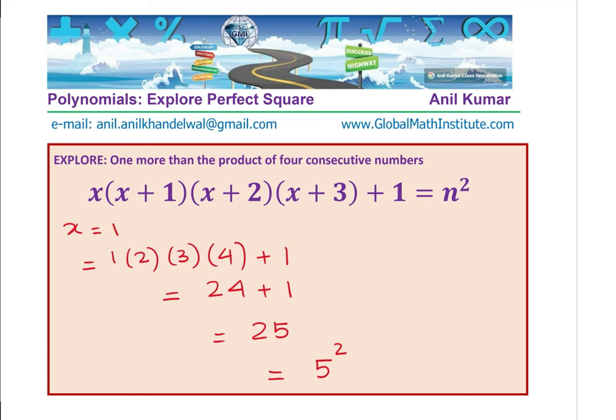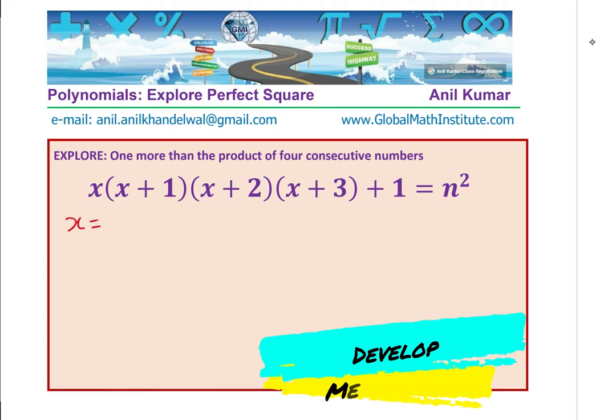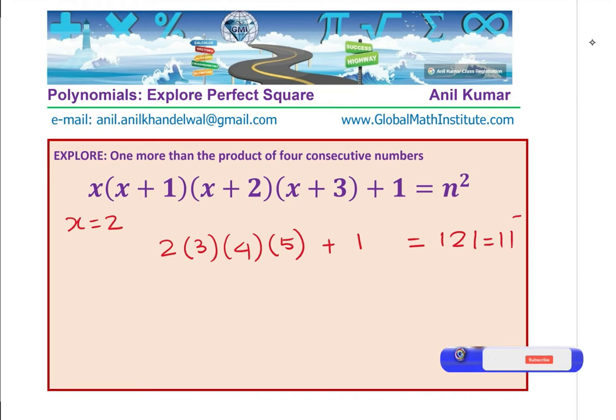Let us explore and figure out if we could do with more examples. Let us say if x is equal to 2. In that case, the numbers could be 2, 3, 4 and 5. We can multiply them, add 1. 2 times 3 is 6 and then we have times 20, 120 plus 1. That gives me 121 and 121 is indeed a square of 11. You get the idea.